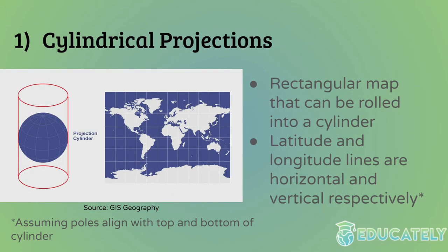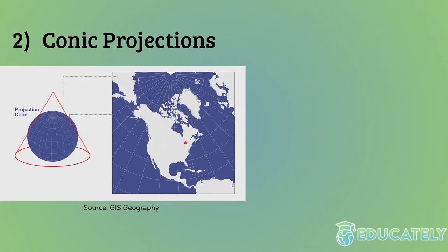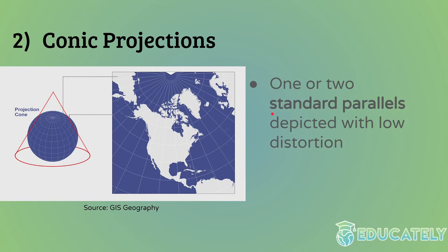With cylindrical projections, especially the Mercator projection, you tend to have a lot of distortion near the poles. Antarctica isn't actually that big — it's small compared to the other continents, but many cylindrical projections make it look extremely large, almost as big as all the other continents combined. With conic projections, you also have distortion, but near those standard parallels where the intersection occurs, that's where the least distortion happens.